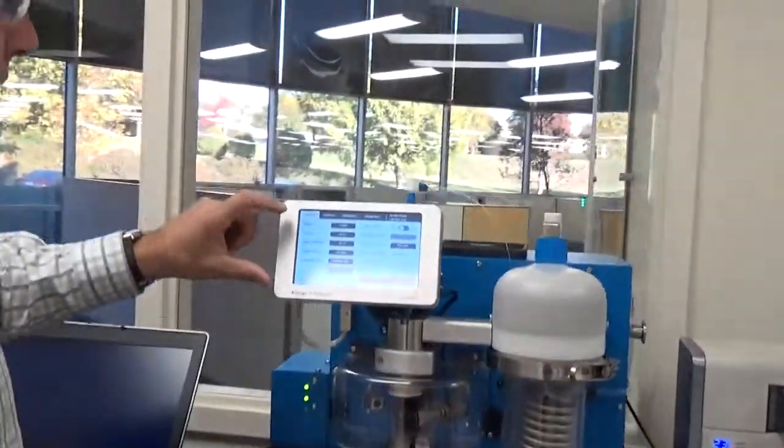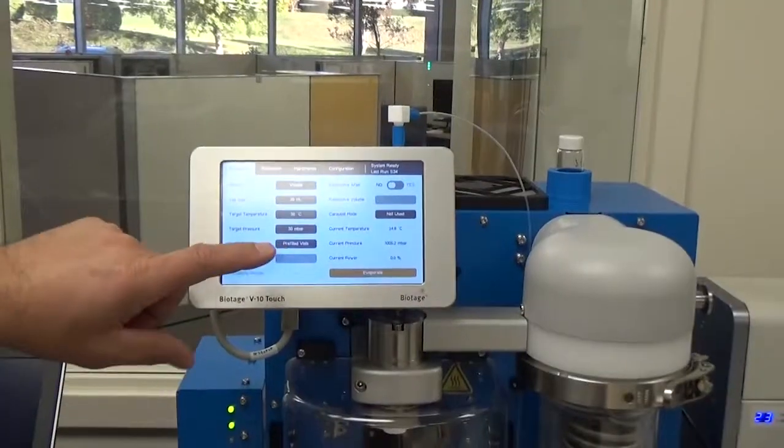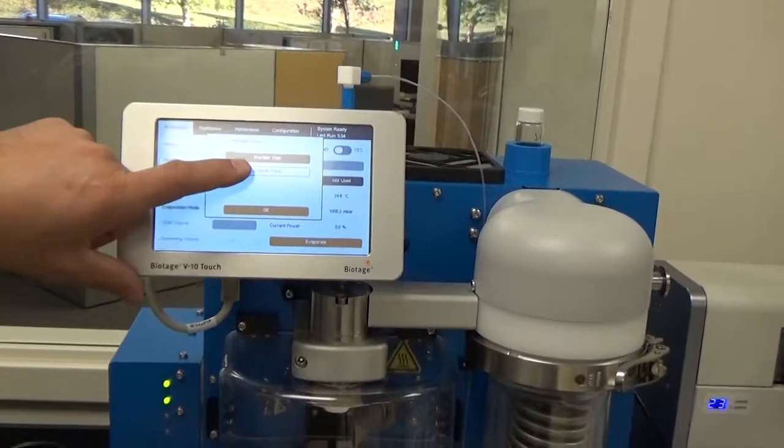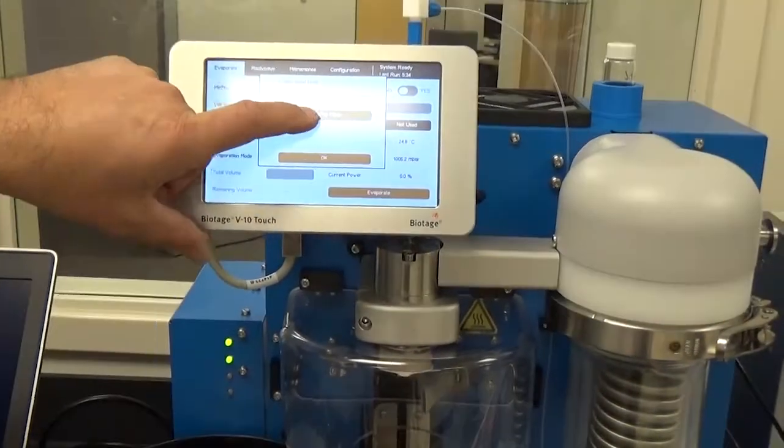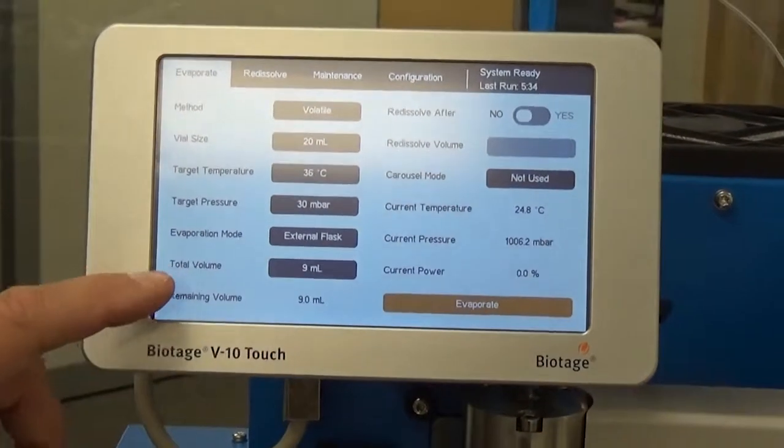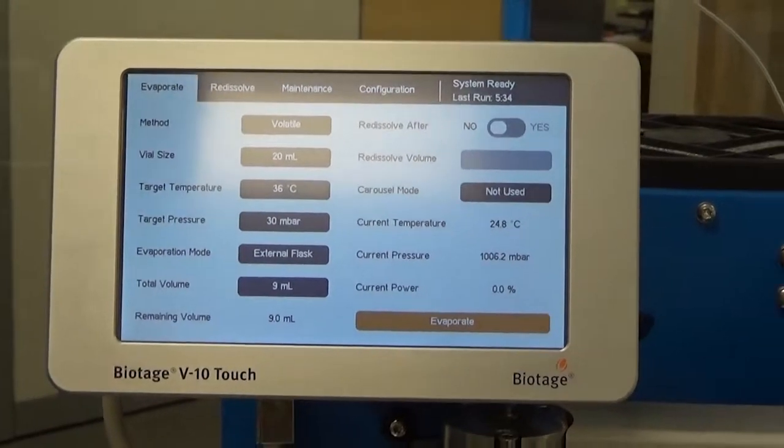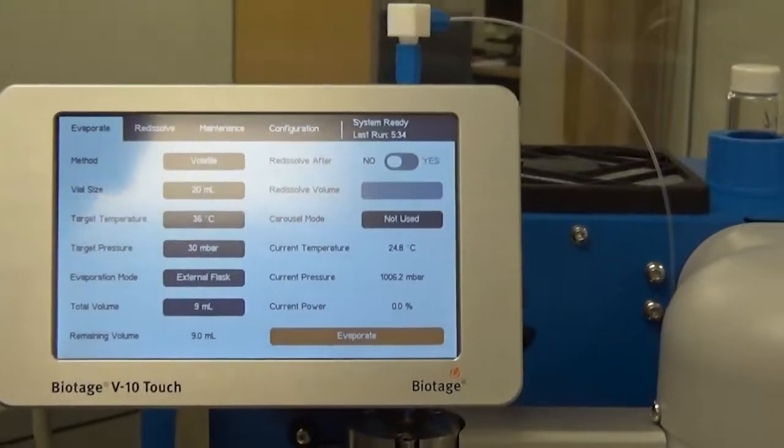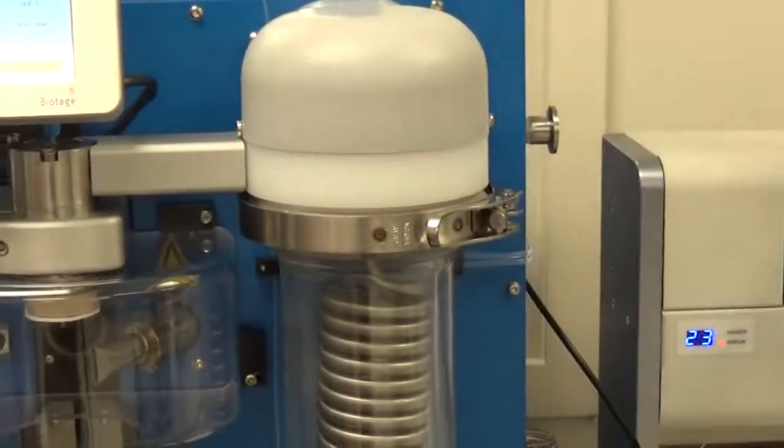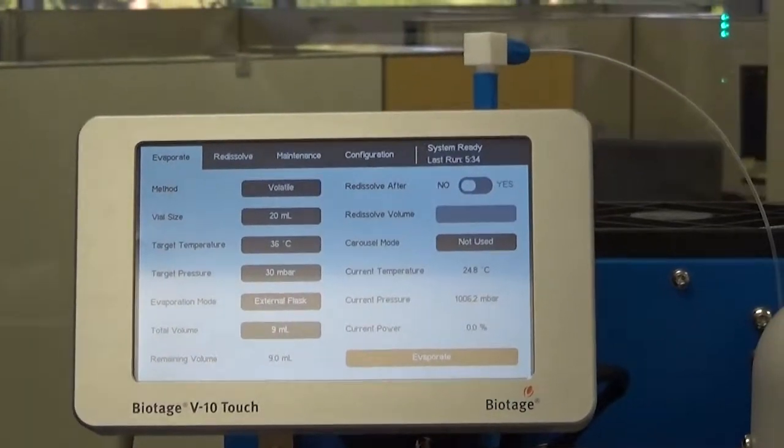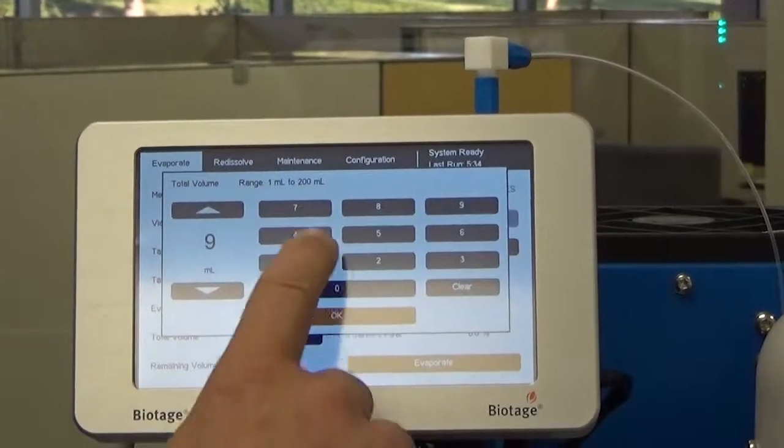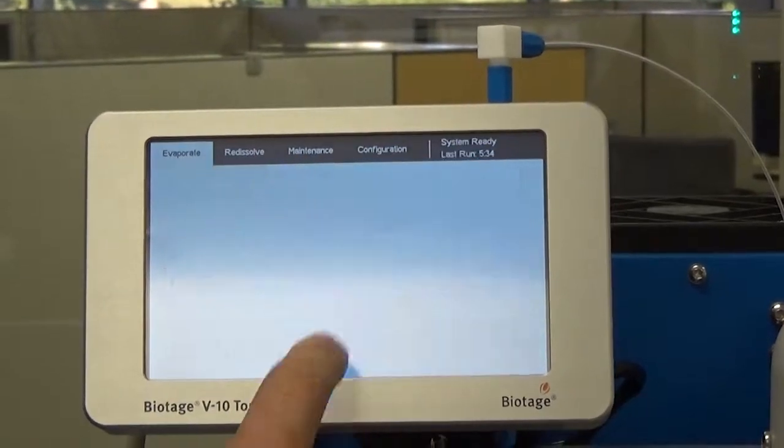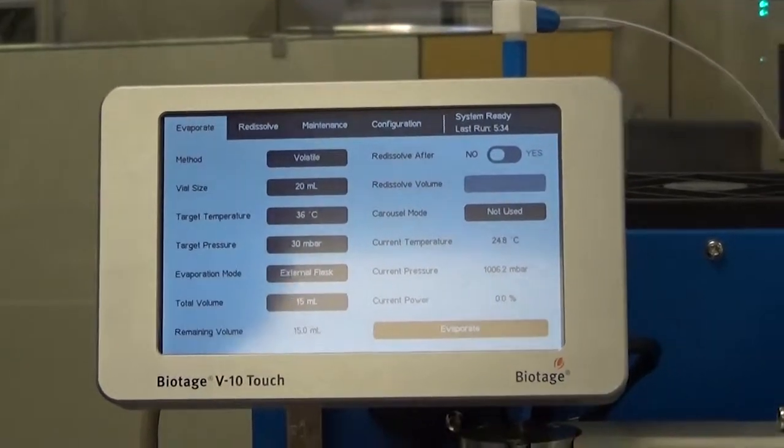And then over here on the software, what you want to do is not use pre-filled vials, but use an external flask. And my total volume that I'm going to use, I could take all of that material right there, but I'm just going to take 15 mils. So I'm going to choose to take 15. And just to demonstrate that.